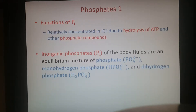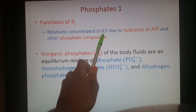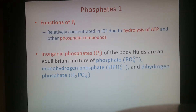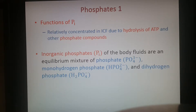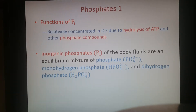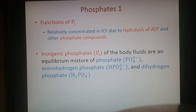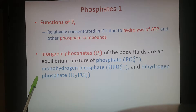Moving on to phosphates: they are in higher concentrations inside the cell — in your intracellular fluid — due to the hydrolysis of ATP. When that ATP molecule is broken down, the phosphate is removed and stays inside the cell until it's added back to ADP to reform ATP, or becomes part of another phosphate compound. Sources of inorganic phosphates in the body include free phosphates, monohydrogen phosphate, and dihydrogen phosphate.